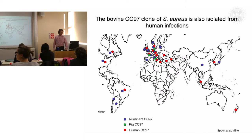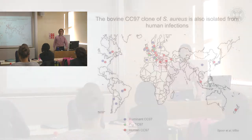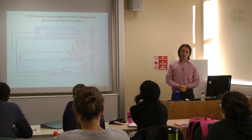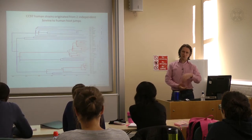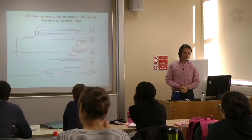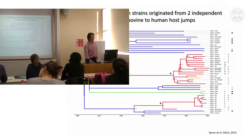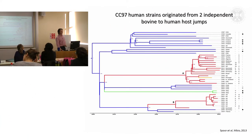In my group, Laura, who was a PhD student, worked out the whole genome sequence for a number of CC97 strains from different hosts. She reconstructed the phylogeny using the program BEAST, which you're going to hear a lot more about later on. This is the tree, and what you can see labelled here in blue are the bovine-associated strains.